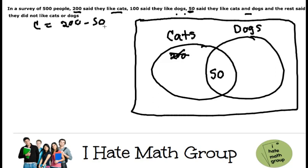I do 200 minus 50, and that's going to give me 150. So that way, you know that only 150 people like cats, but 50, which is the union, is cats and dogs.